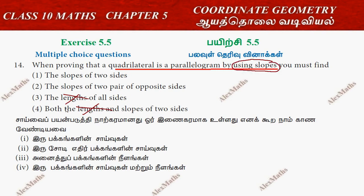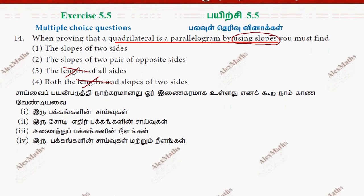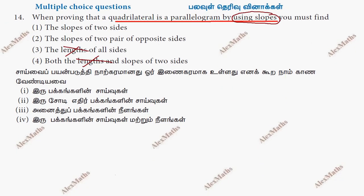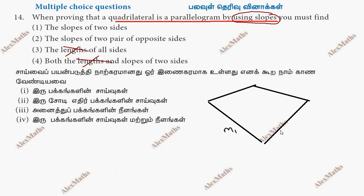The first option is the slope of two sides. If the slope of two sides — suppose it is M1, M2, M3 — suppose M1 and M2 are the slopes, we have to prove parallelogram. Or M2 and M3 are the opposite sides — this is the parallelogram.